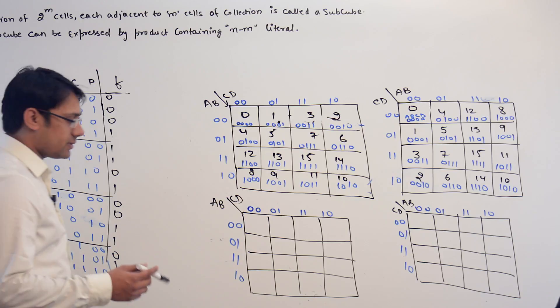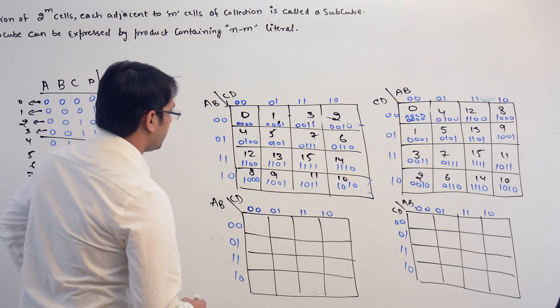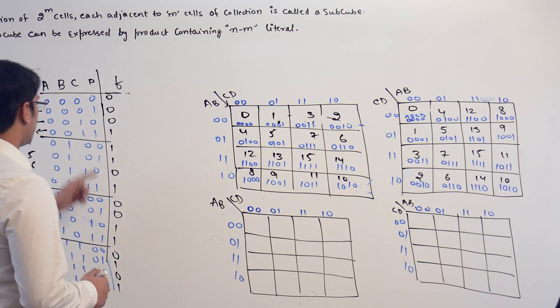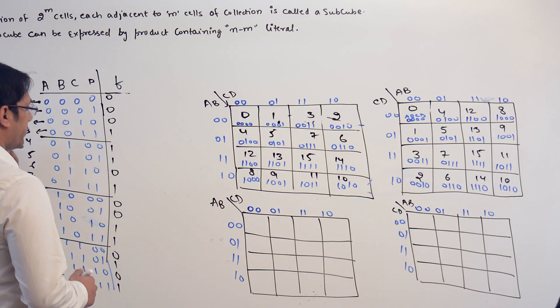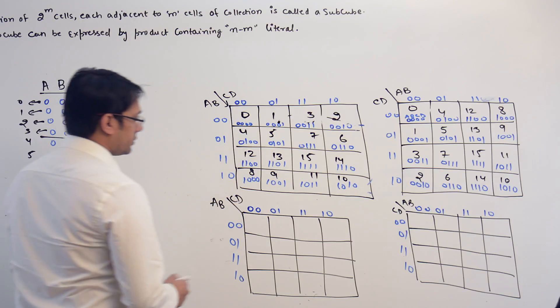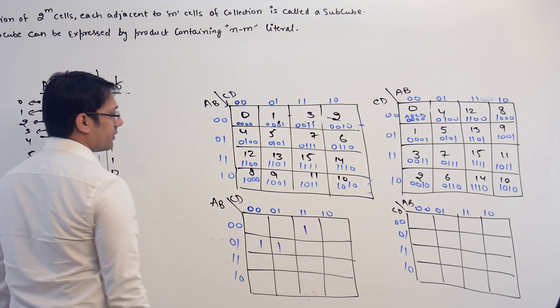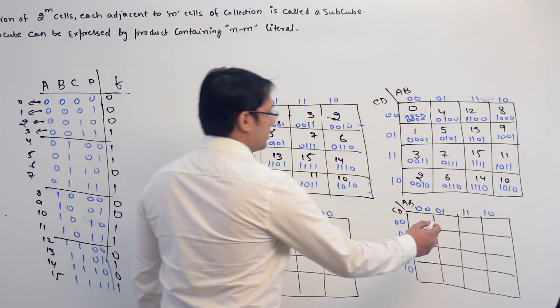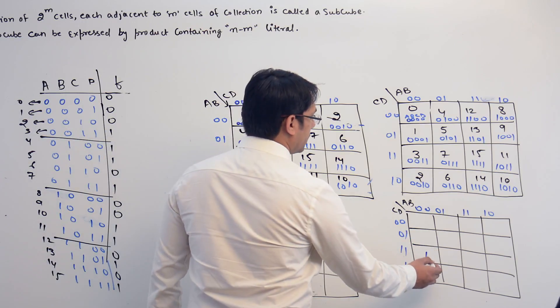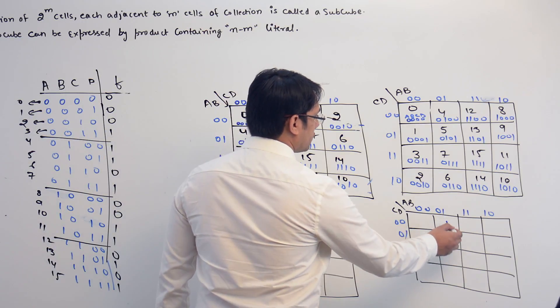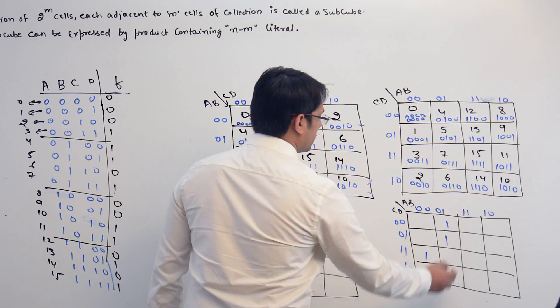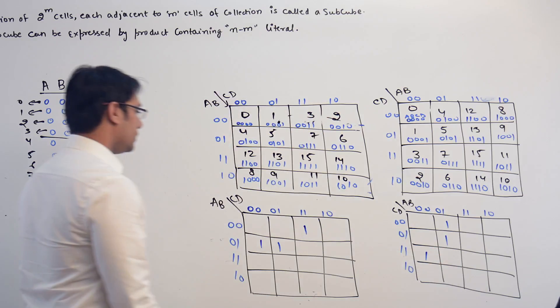In both the kmaps, let me mark it. We have the values 1 at 3, 4, and 5. So this is 3, this is 4, this is 5. Here, this is 3, this is 4 and this is 5.